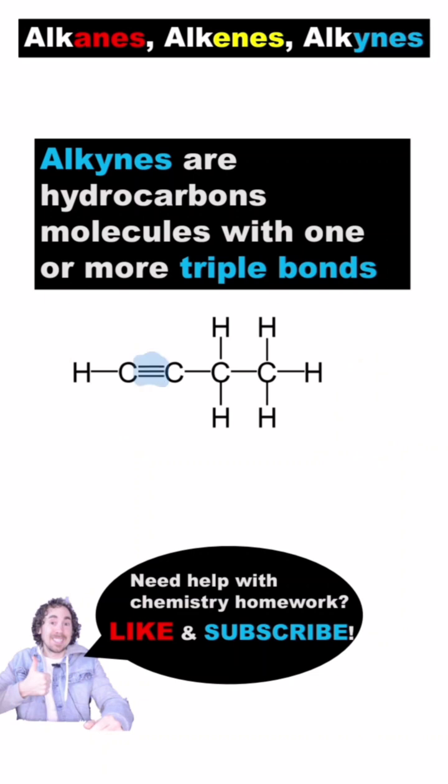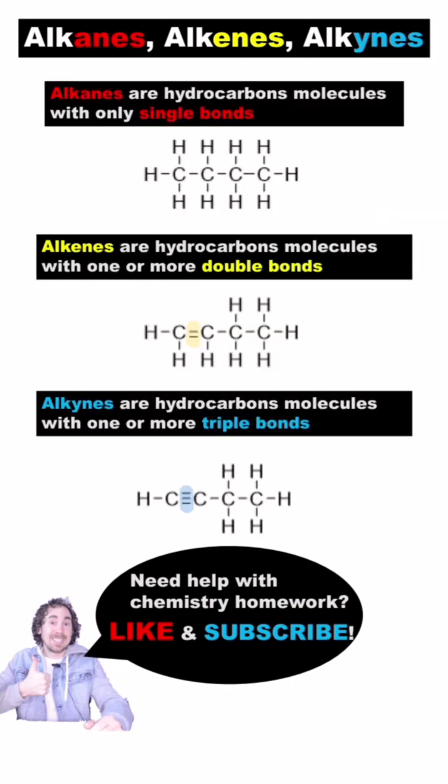An alkyne is a hydrocarbon with one or more carbon-to-carbon triple bonds. The naming is the same as the alkenes, but the names end in "-yne", to tell us that there's a triple bond.